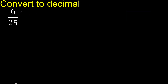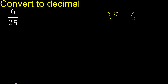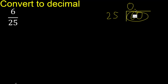6 divided by 25. 6 is less than 25, therefore complete — always complete with 0 point. 60 is not less than 25, therefore work with 60.